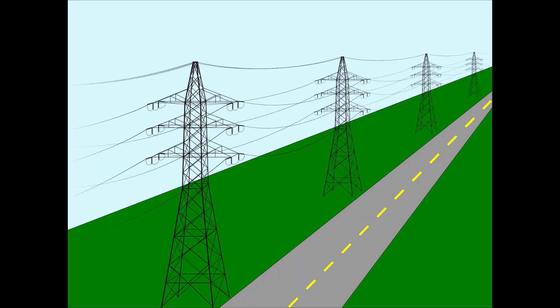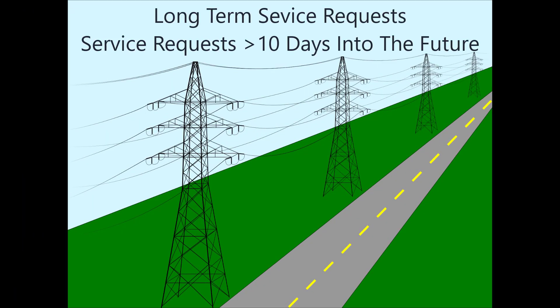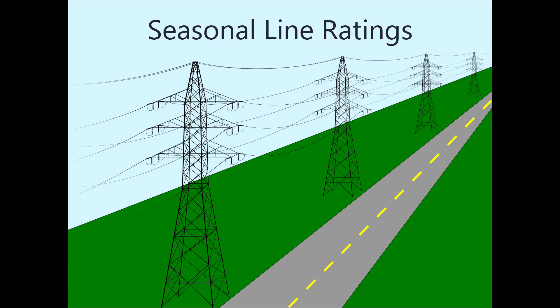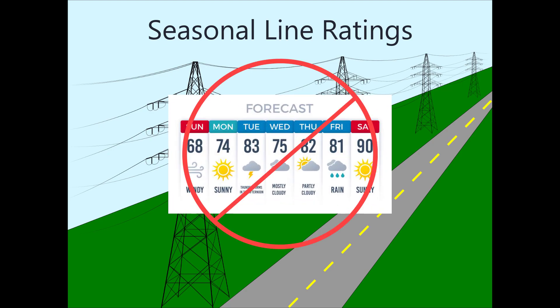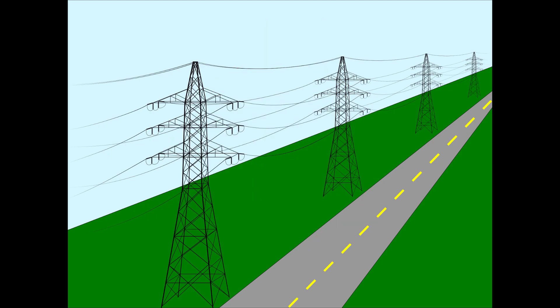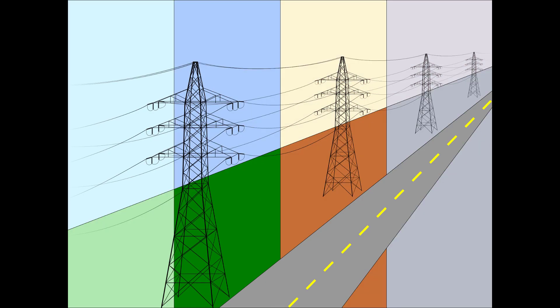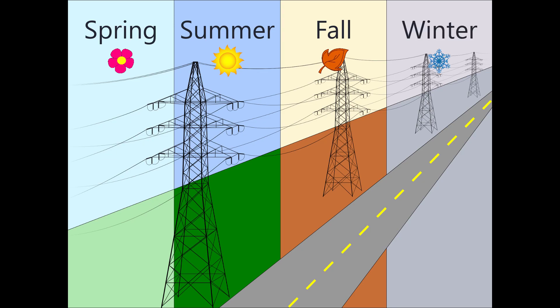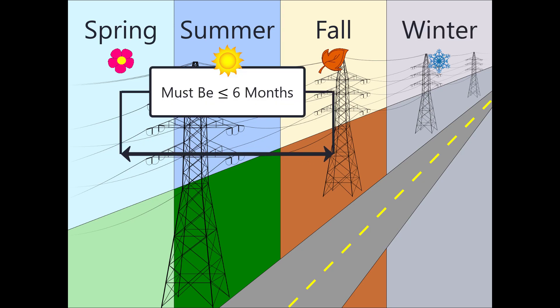However, for longer-term service requests, or service requests anticipated to occur more than 10 days in the future, seasonal line ratings may be used. Seasonal line ratings are very similar to ambient adjusted ratings, except rather than relying on forecasted ambient conditions, line ratings are instead adjusted for worst-case weather representations for no fewer than four seasons. Seasons can be defined by the transmission provider, but they cannot be any longer than a six-month period.